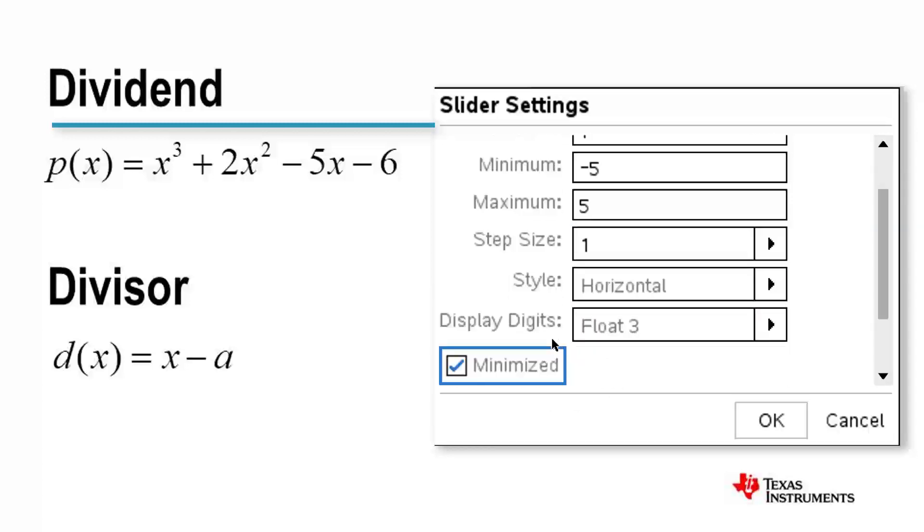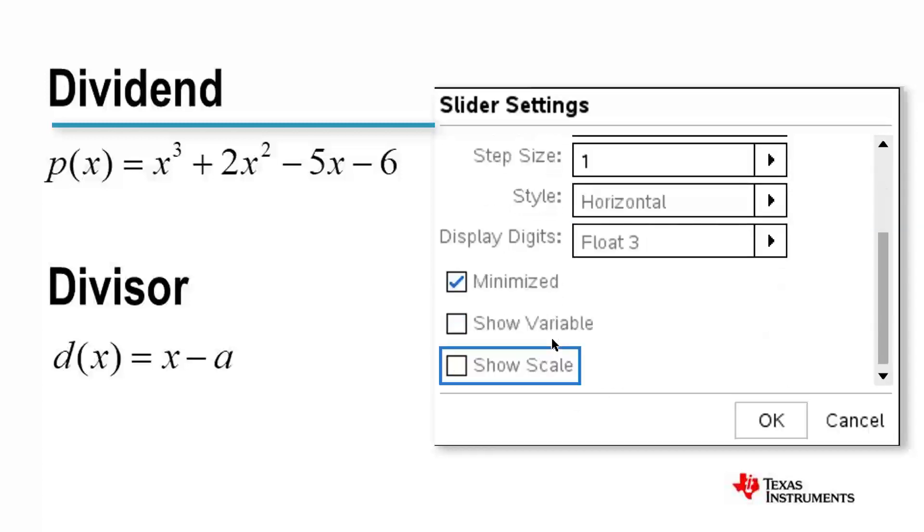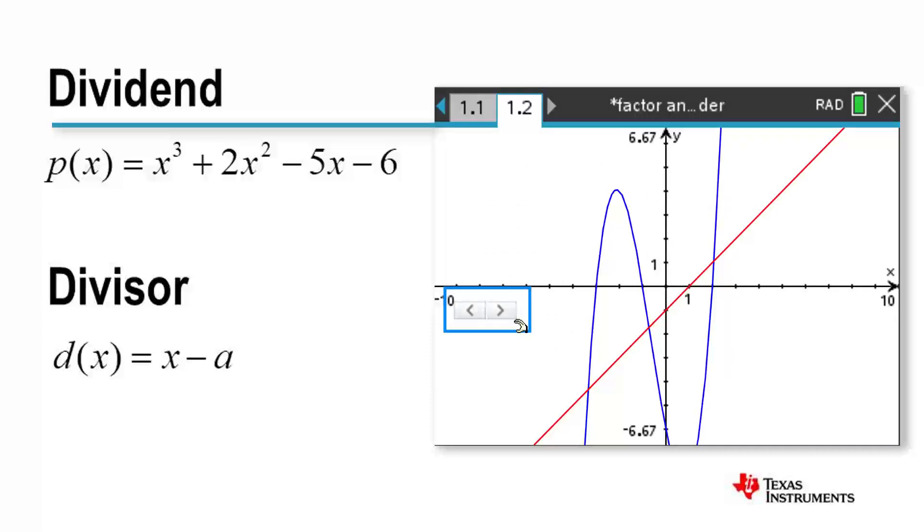My divisor is the simplest polynomial, a linear function. It crosses the y-axis at negative a, and the x-axis at a.